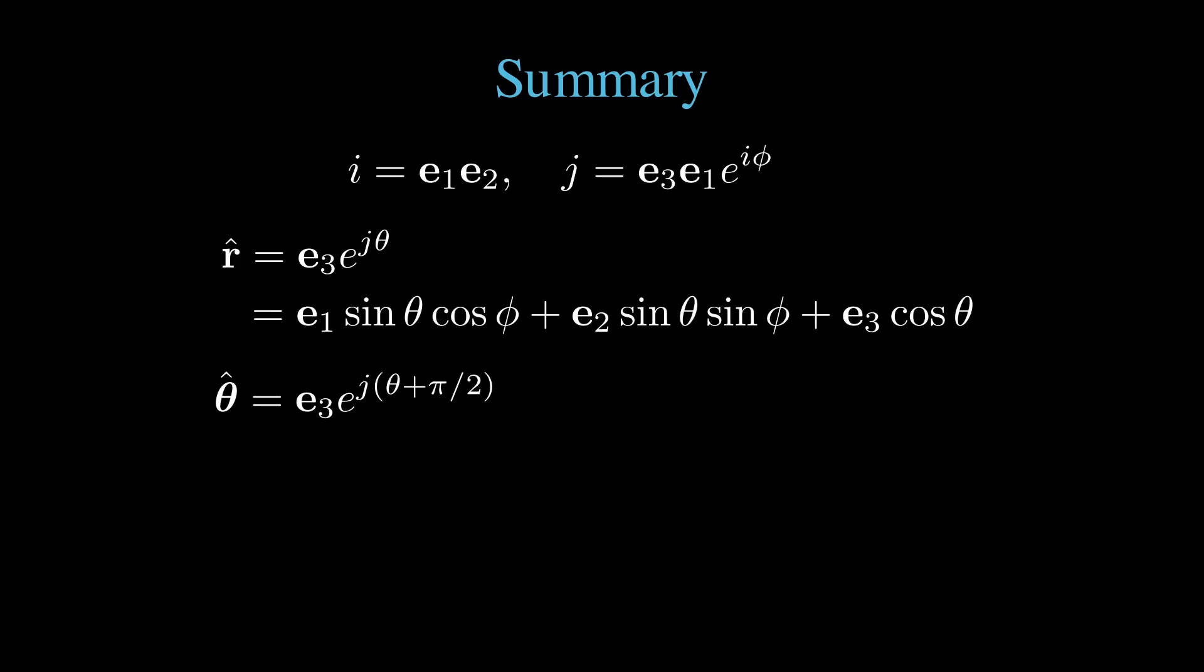We found the theta hat vector was e3 rotated by j theta, taking it to r hat, and rotating another pi by 2 radians, 90 degrees, so that it's perpendicular to r hat. We also found the conventional vector form, which is considerably more complicated. Finally, we found the azimuthal unit vector, phi hat. Phi hat was e2 e to the i phi. Again, we have a rotation with a single-sided rotor because we're rotating strictly within a plane. It's a different plane than the e3 r hat plane. This is the xy plane. And our phi hat was minus e1 sin phi plus e2 cos phi.